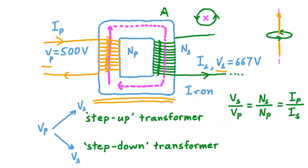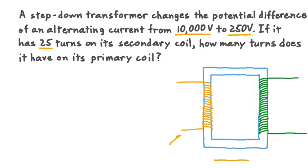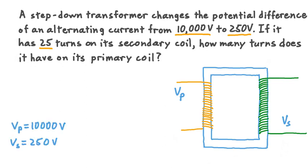Now let's get some practice solving a question about a transformer. A step-down transformer changes the potential difference of an alternating current from 10,000 volts to 250 volts. If it has 25 turns on its secondary coil, how many turns does it have on its primary coil? Let's say this is our transformer — here is our primary coil and here is our secondary coil. We're told that the potential difference in the primary coil, V sub P, is equal to 10,000 volts, and the potential difference in the secondary coil, V sub S, is 250 volts. We're also told that the secondary coil has 25 turns — we'll call that N sub S — and we want to solve for N sub P, the number of turns in the primary coil.